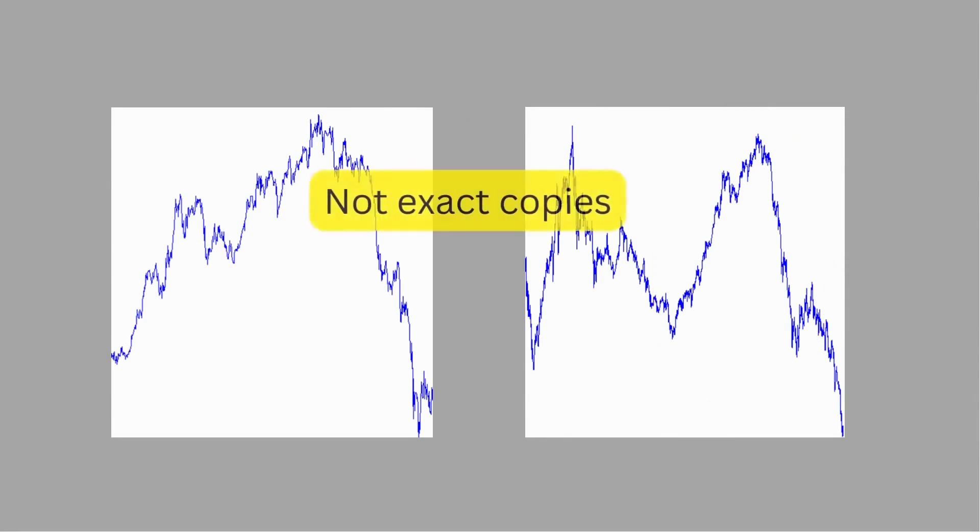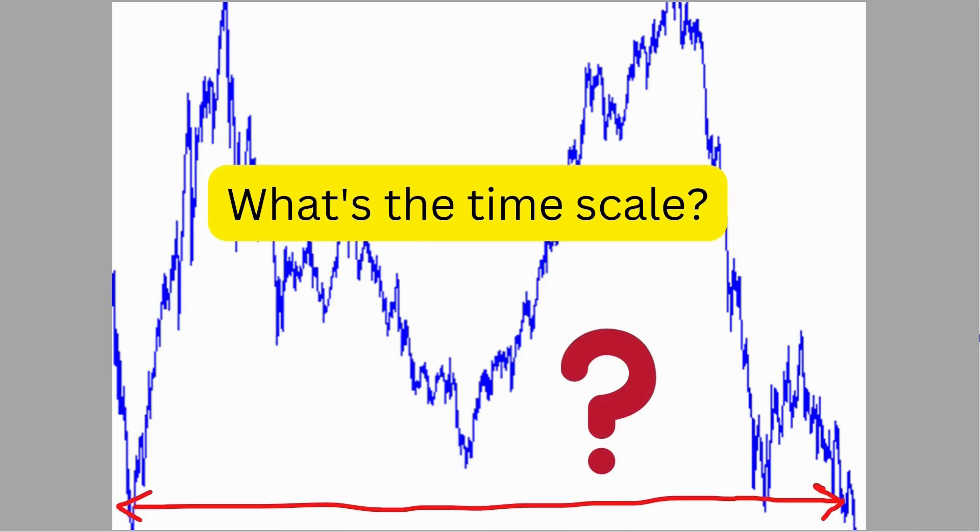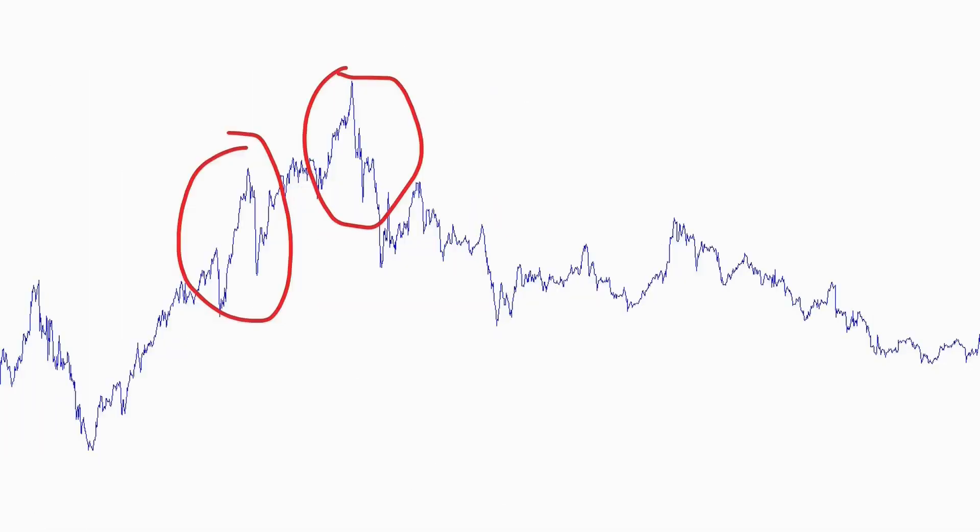For example, it's pretty much impossible to tell what scale financial market data is unless you can see the x-axis. What some commentators have claimed is that because fractals have these self-similar properties, there should be repeating patterns in fractals.